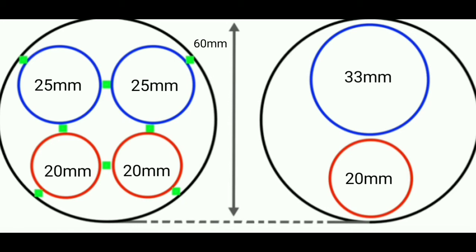In the two valve cylinder there is a smaller gap between the inlet and outlet valve, whereas in the four valve cylinder we have a larger gap between each inlet and outlet valve.